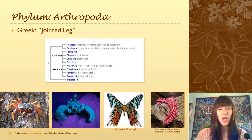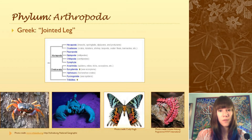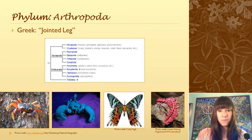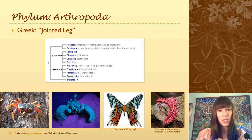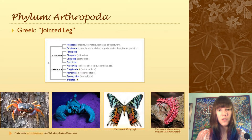Everything that we talk about from here on out — this PowerPoint and the insect PowerPoint — all of these are arthropods. Arthropoda is a phylum and it includes things like your crabs, lobsters, spiders, scorpions, pseudoscorpions, mites, ticks, millipedes, centipedes and sow bugs. Arthropod in Greek just means jointed leg.